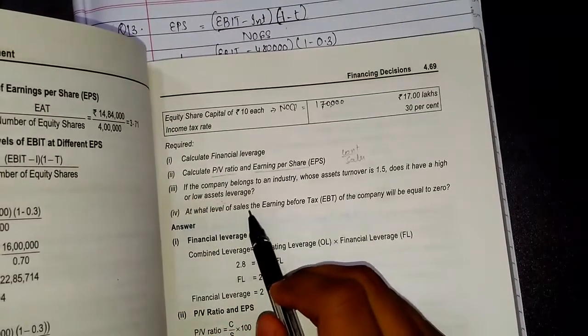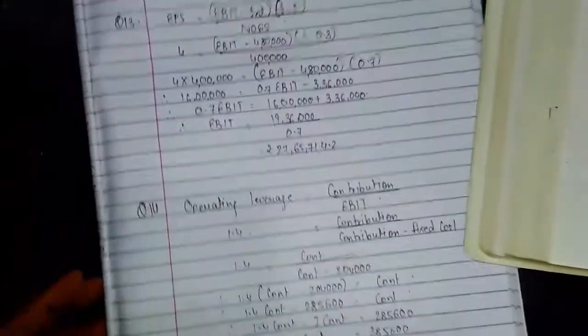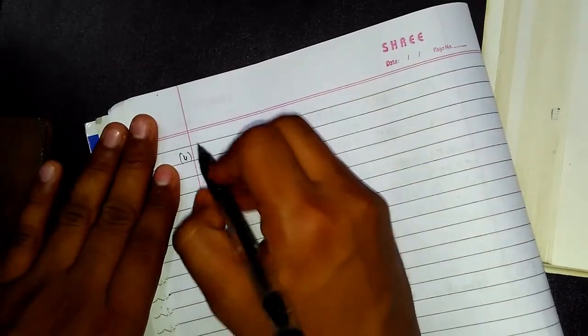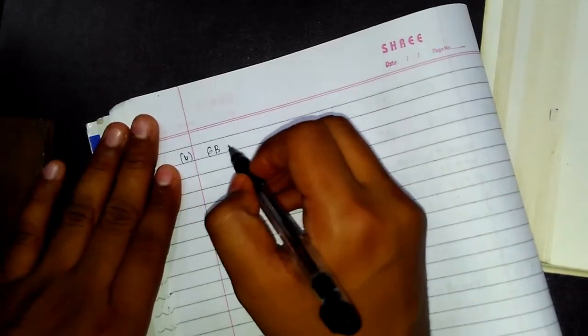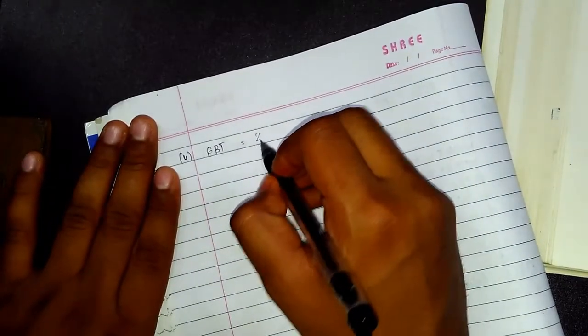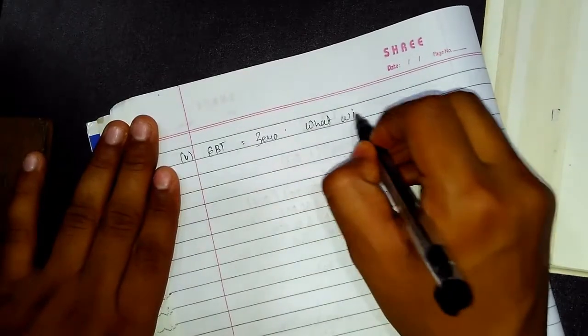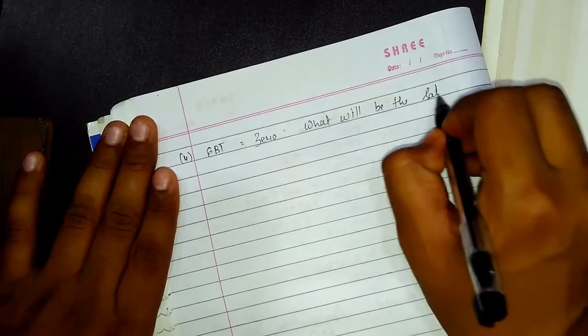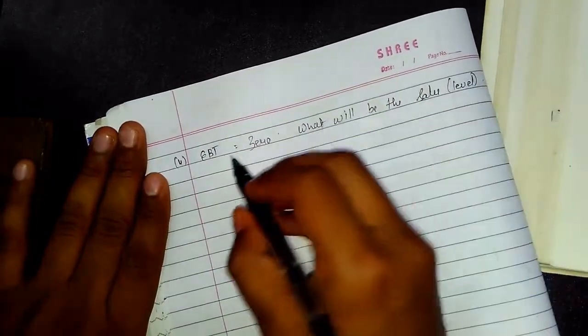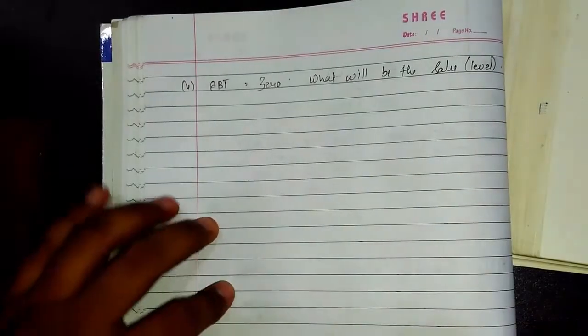We will move on to the fourth part which is very important: at what level of sales will the EBIT of the company be equal to 0? So we will do that first. In fourth part, EBIT, earning before tax equals 0. What will be the level of sales?